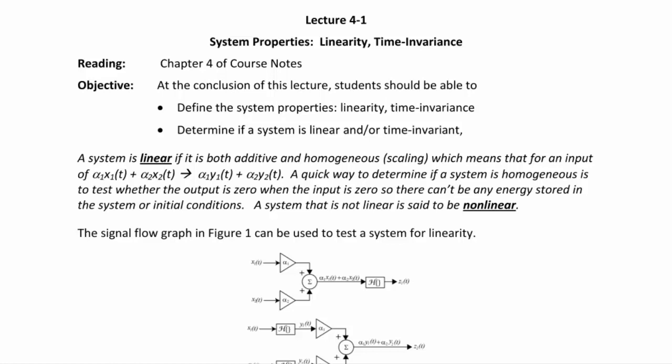Today we start lecture 4-1 on the system properties of linearity and time invariance. This is from chapter 4 of the course notes. The objectives of today's lecture are to define the system properties of linearity and time invariance, and to determine if a system is linear and/or time invariant.